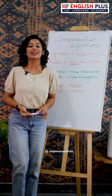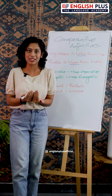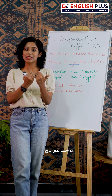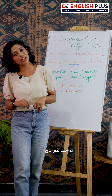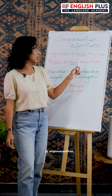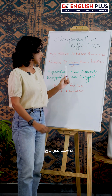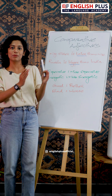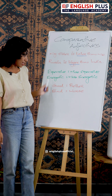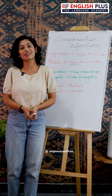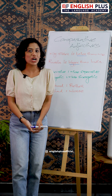So in this video we talked about comparative adjectives. Usually you can add -er to a word to form the comparative. For longer words like 'expensive,' you use 'more expensive.' And for irregular words, good becomes better and bad becomes worse.